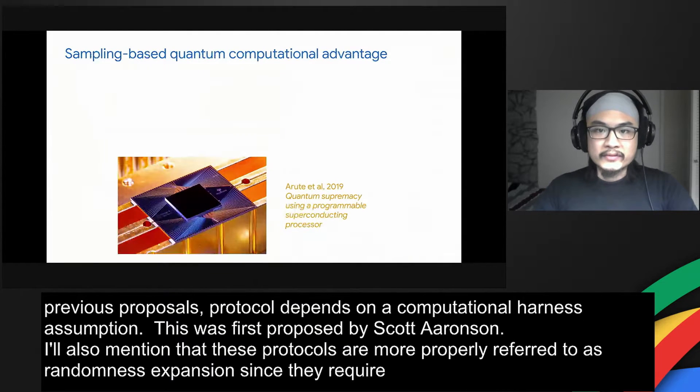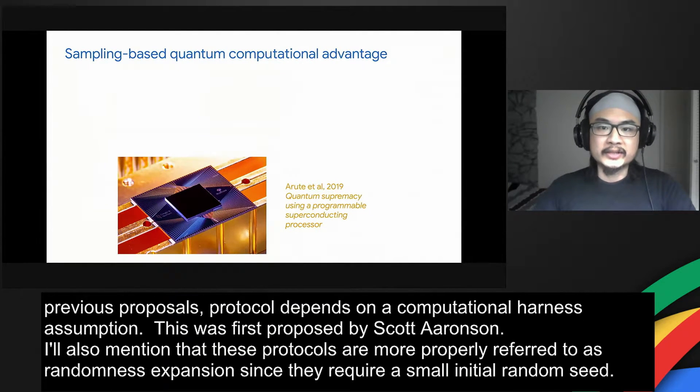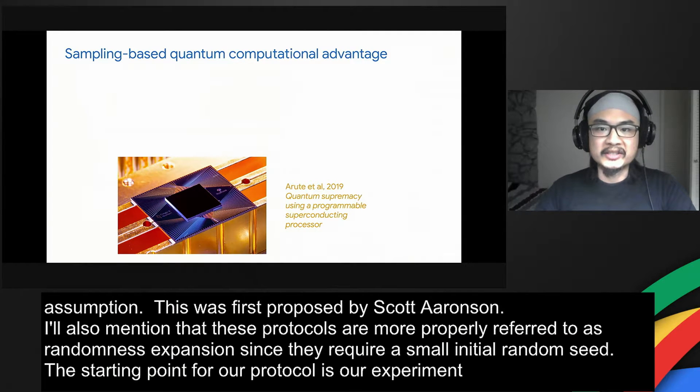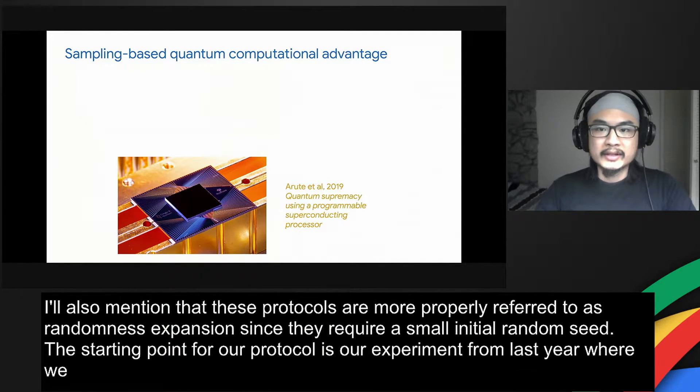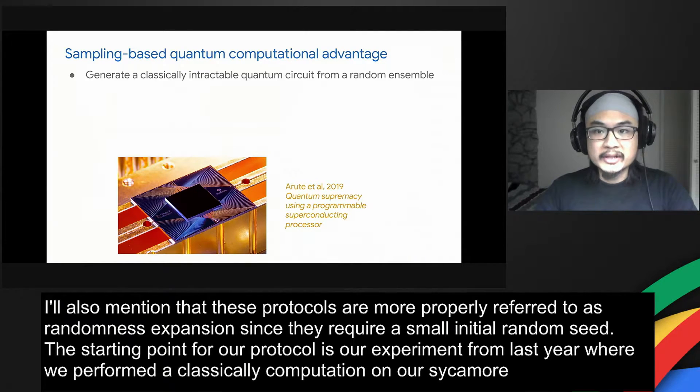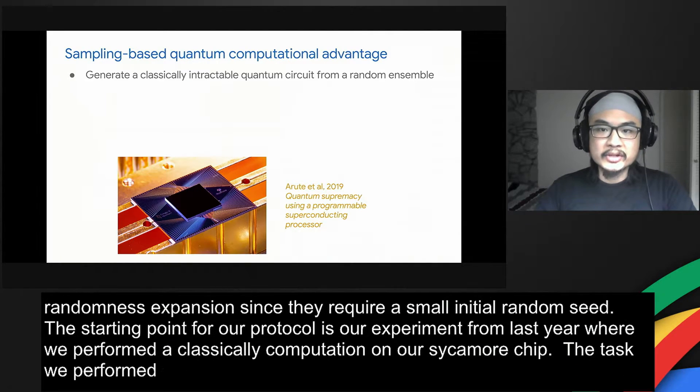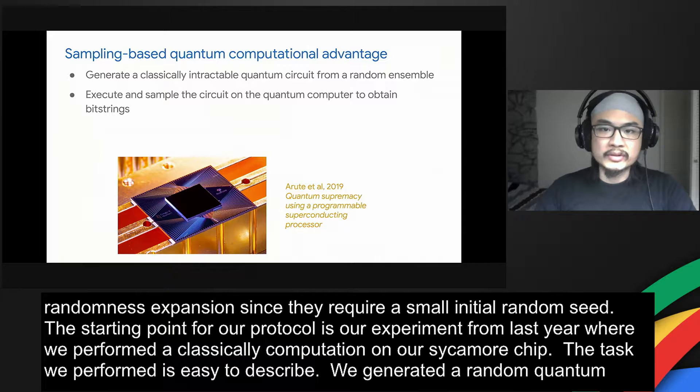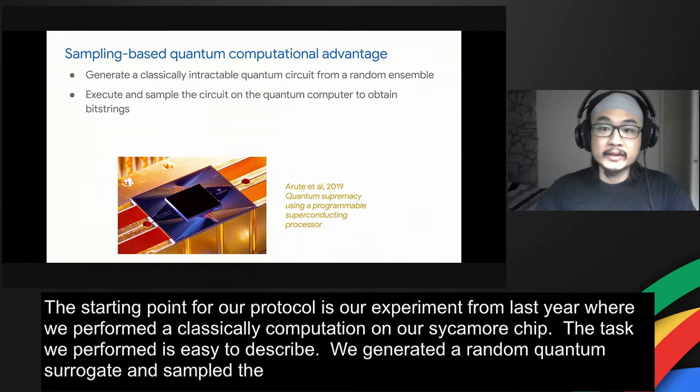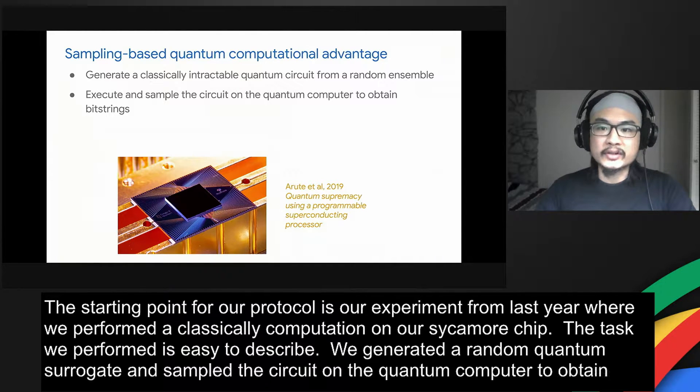The starting point for our protocol is our experiment from last year where we performed a classically intractable computation on our Sycamore chip. The task we performed is easy to describe. We generated a random quantum circuit on 53 qubits with 20 layers of single qubit and two qubit gates. Then we sampled the circuit on the quantum computer to obtain bit strings. This sampling task is easy for a quantum computer, but we believe it's hard for classical computers.